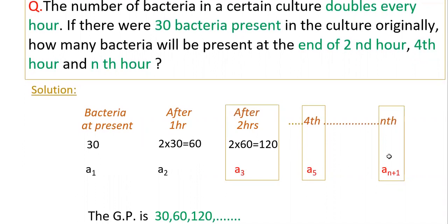Like this the bacteria will increase. If you see here, this is GP because 30, 60, 120 - all these numbers form a geometric progression. The common ratio is same, that is 2. 60 by 30 is 2 and 120 by 60 is also 2, so it is GP.